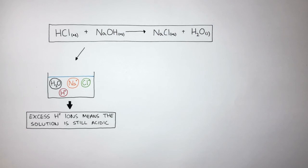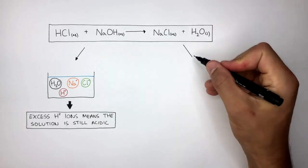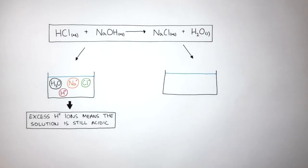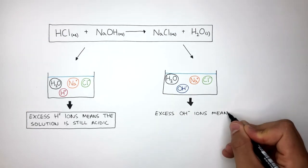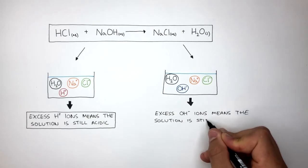Let's say we have a different scenario now and again the reaction is finished and we're left with water, sodium chloride solution, but this time we have hydroxide ions left in solution. This means again the reaction hasn't been completely neutralized. Excess OH- ions means the solution is still alkaline.